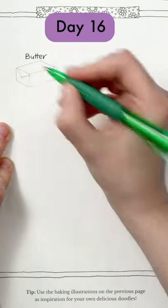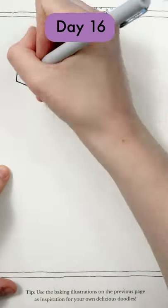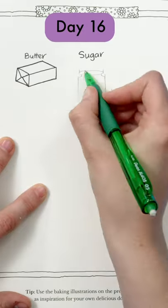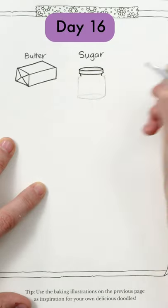Butter is like a 3D rectangle with a triangle on the end. A jar of sugar is a bit like a cylinder with a few extra details.